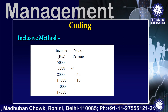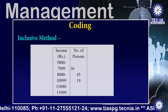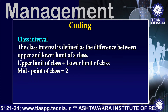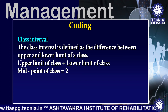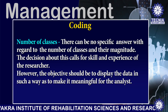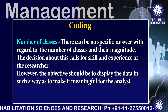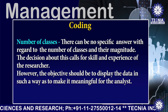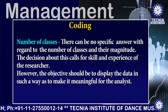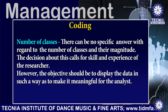The second method is the inclusive method. Here again, in the table, income and number of persons are given. The class interval is defined as the difference between the upper and lower limit of a class. The midpoint of a class equals the upper limit plus the lower limit of the class divided by 2. There can be no specific answer with regard to the number of classes and their magnitude; the decision calls for the skills and experience of the researcher. However, the objective should be to display the data in such a way as to make it meaningful for the analyst.